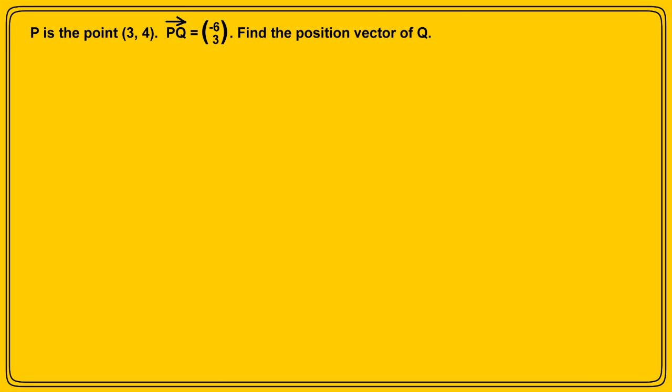P is the point 3, 4. Vector PQ is minus 6 over 3. And you're asked to find the position vector of the point Q. Now, a diagram should help us understand what's going on here.